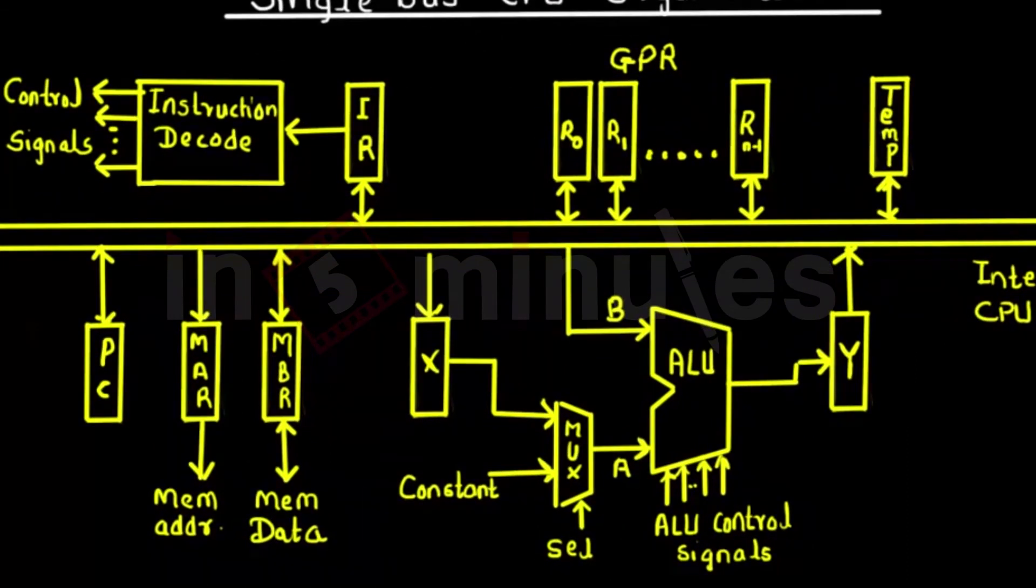These are the different registers and components used in single bus CPU organization. Here you can see the program counter, the instruction register IR, and the decoder. We saw for external memory access we have MAR and MBR registers - memory address and memory buffer for data and address regarding the memory. We have also seen the general purpose registers that can be used by users and temporary registers present in some organizations.